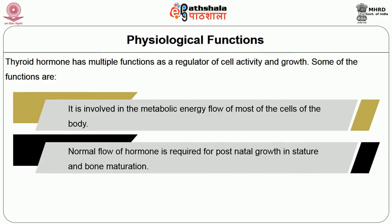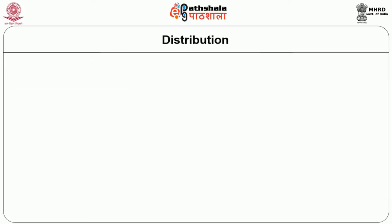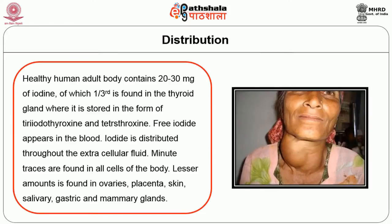It is involved in the metabolic energy flow of most of the cells of the body. Normal flow of hormone is required for postnatal growth and bone maturation. It is also necessary for the functioning of basal metabolism. The healthy human body contains 20–30 mg of iodine, of which one third is found in the thyroid gland, where it is stored in the form of triiodothyroxine and tetrathyroxine. Free iodide appears in the blood.